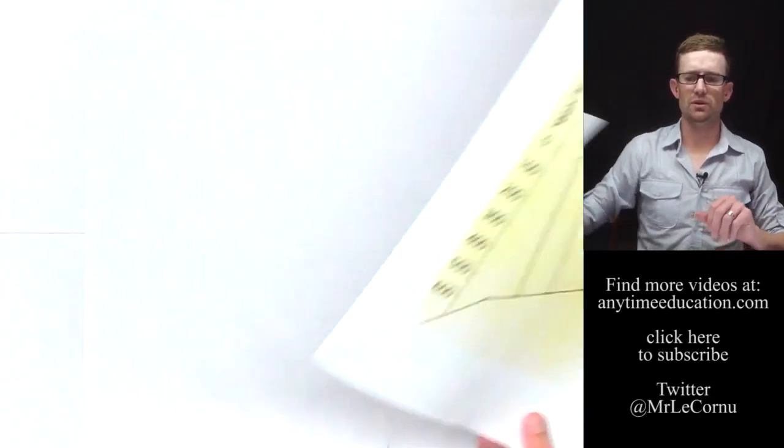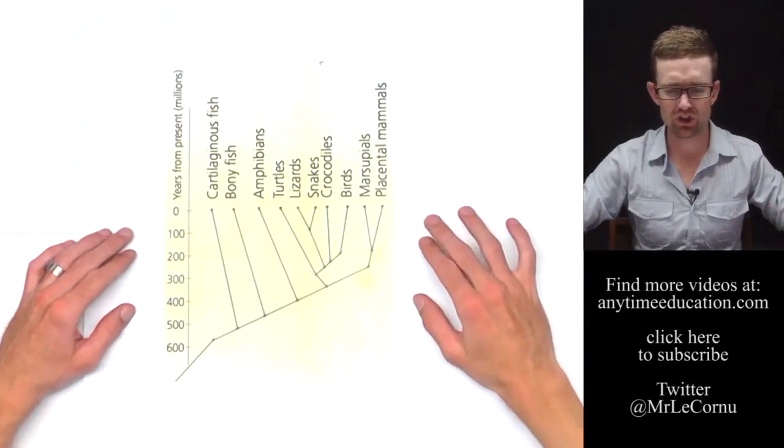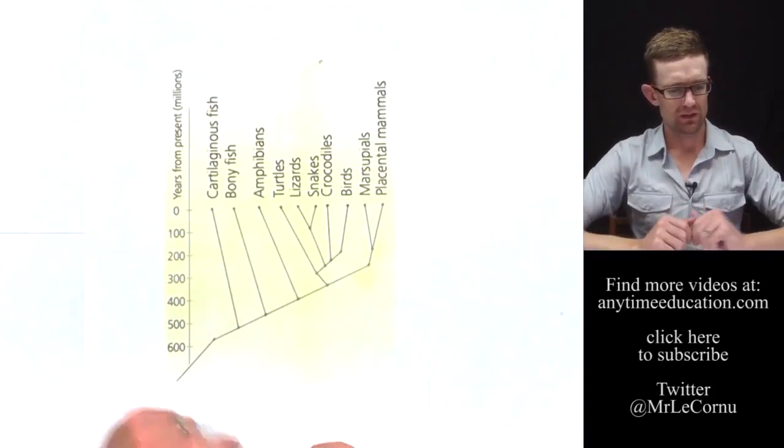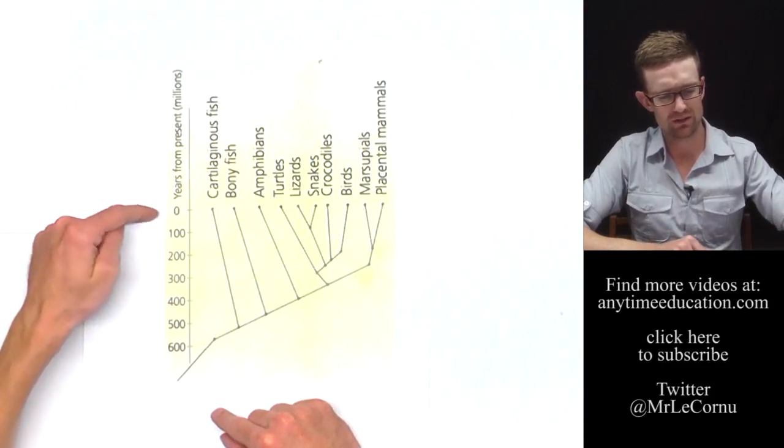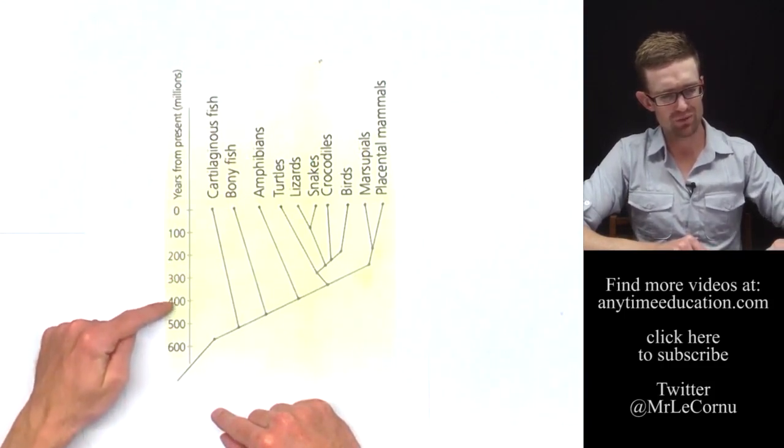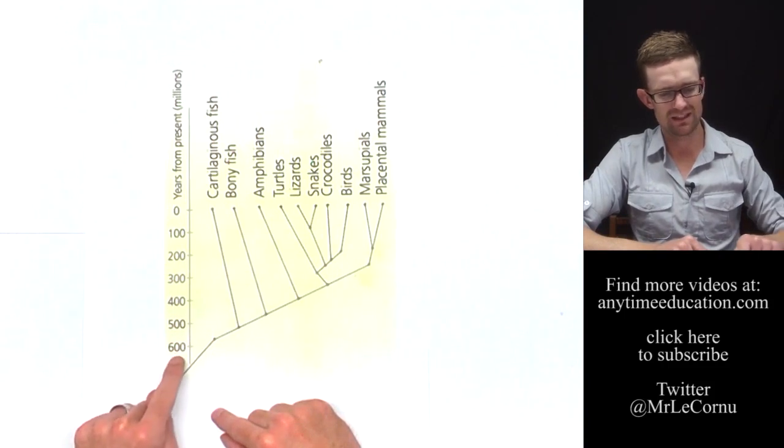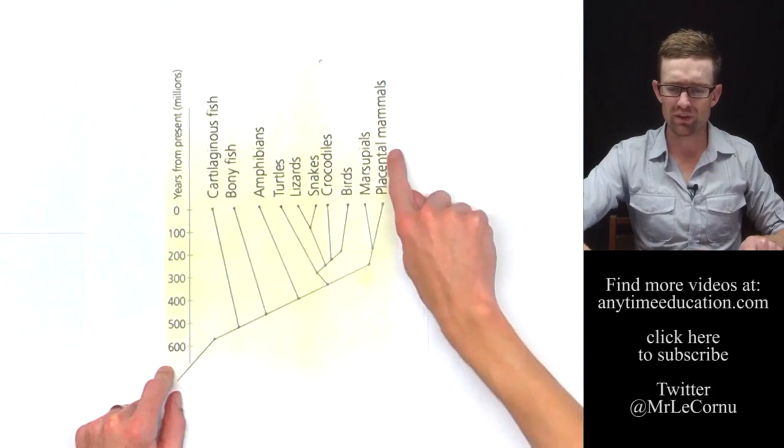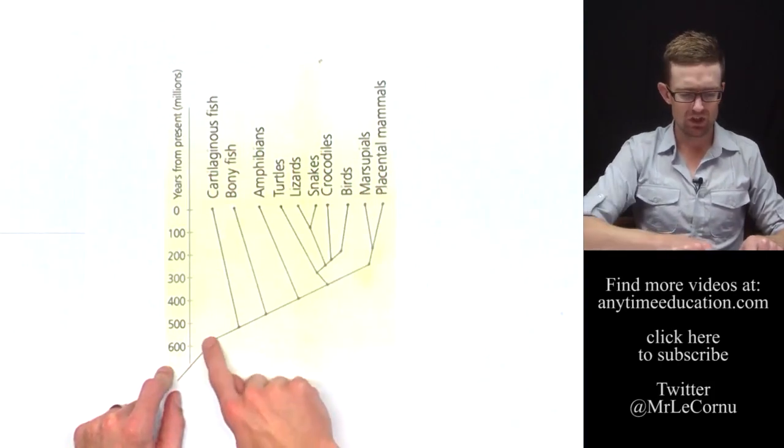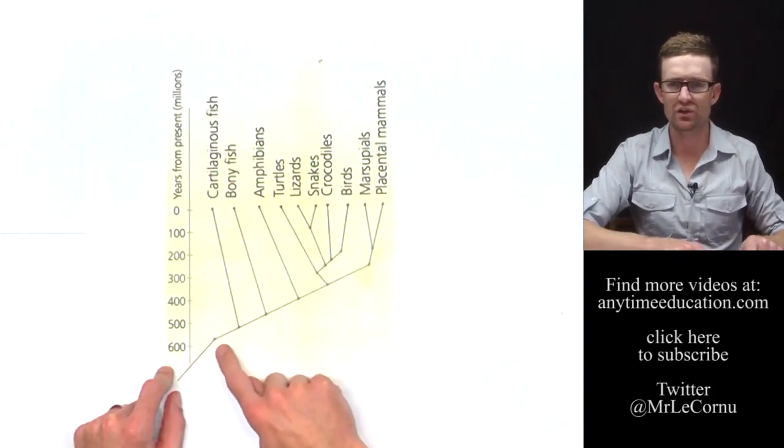Here's an example of what we call a phylogenetic tree. This shows the years from present. So here is present, going back every 100 million years. So here we're 600 million years ago. And at this point, all of these species here shared a common ancestor 600 million years ago.